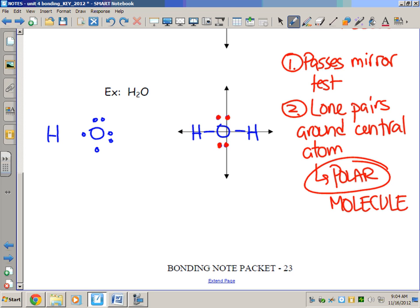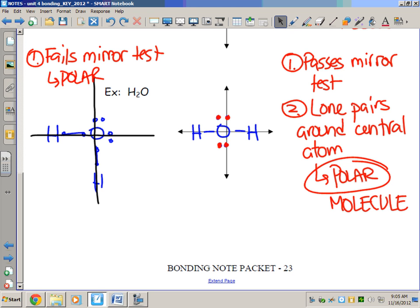Now all of a sudden you have something that does not pass the mirror test. The idea now is there are two different ways to draw a water molecule. One way would fail the mirror test and you're done, that's this way. The other way, even though it passes the mirror test, it's the lone pairs that indicate to you that it is still a polar molecule, asymmetrical.